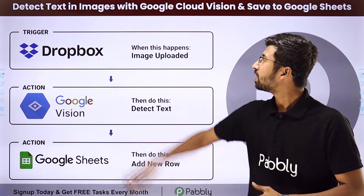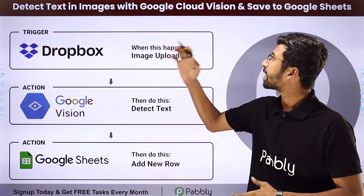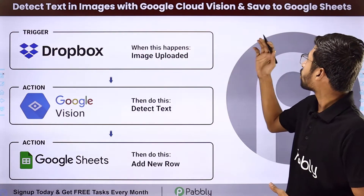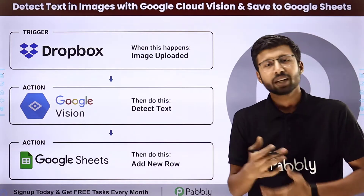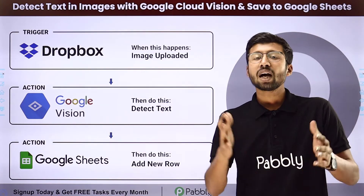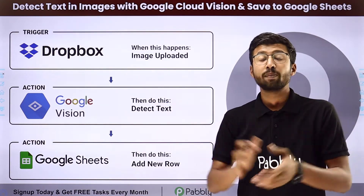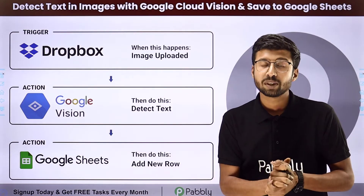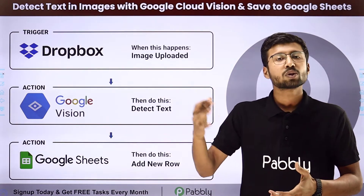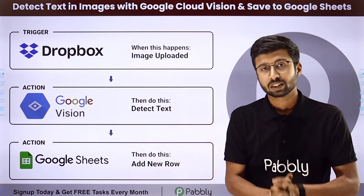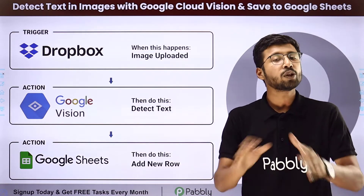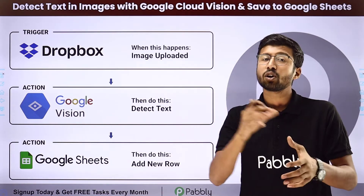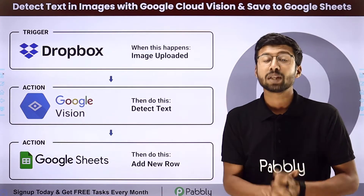In this video we will learn how to detect text in images with Google Cloud Vision and save to Google Sheet. You may have lots and lots of images with some text and you want to get that text from those images and add that data somewhere else. You can completely automate this process of extracting or detecting text from an image.